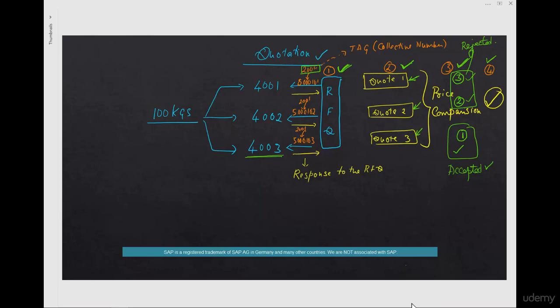If this price can be used only one time, then all we can do is take that quotation, create a purchase order, and use it. But if it can be used for a long time, then we can convert that into what's called a source of supply.